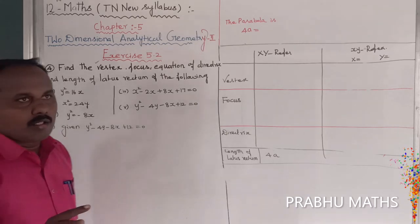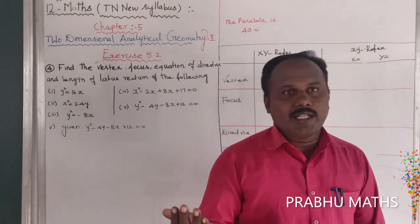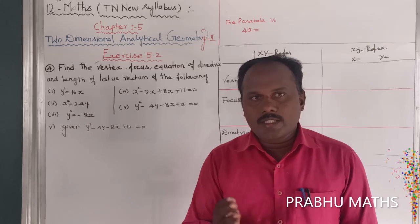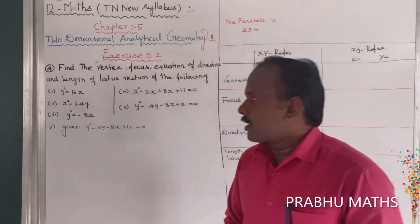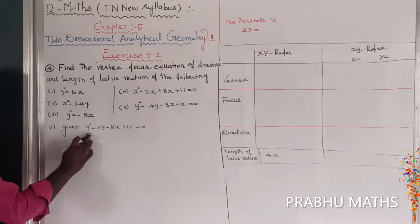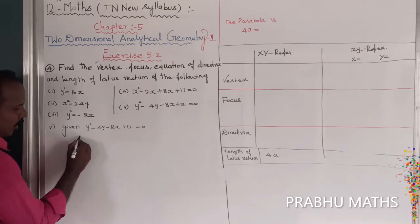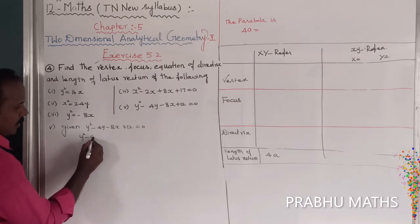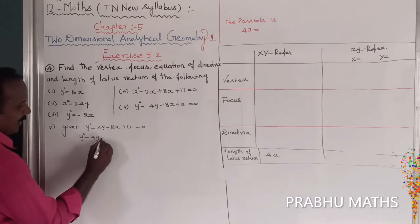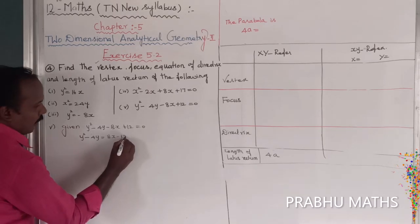Since y-squared appears in the equation, this is a y-squared type parabola — it opens left or right. We rearrange: bring y squared minus 4y to the left side, and move the remaining terms to the right side, giving 8x minus 12.